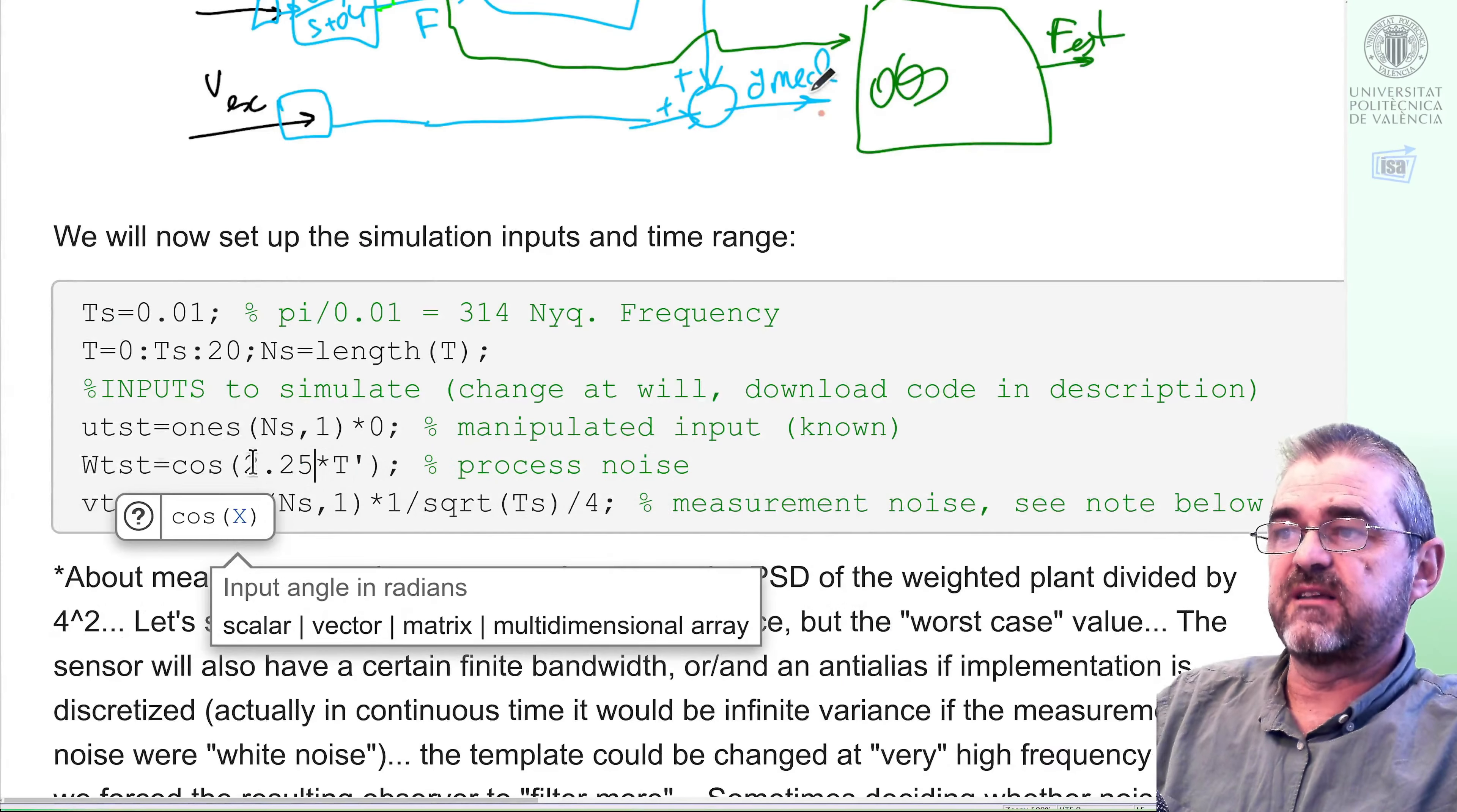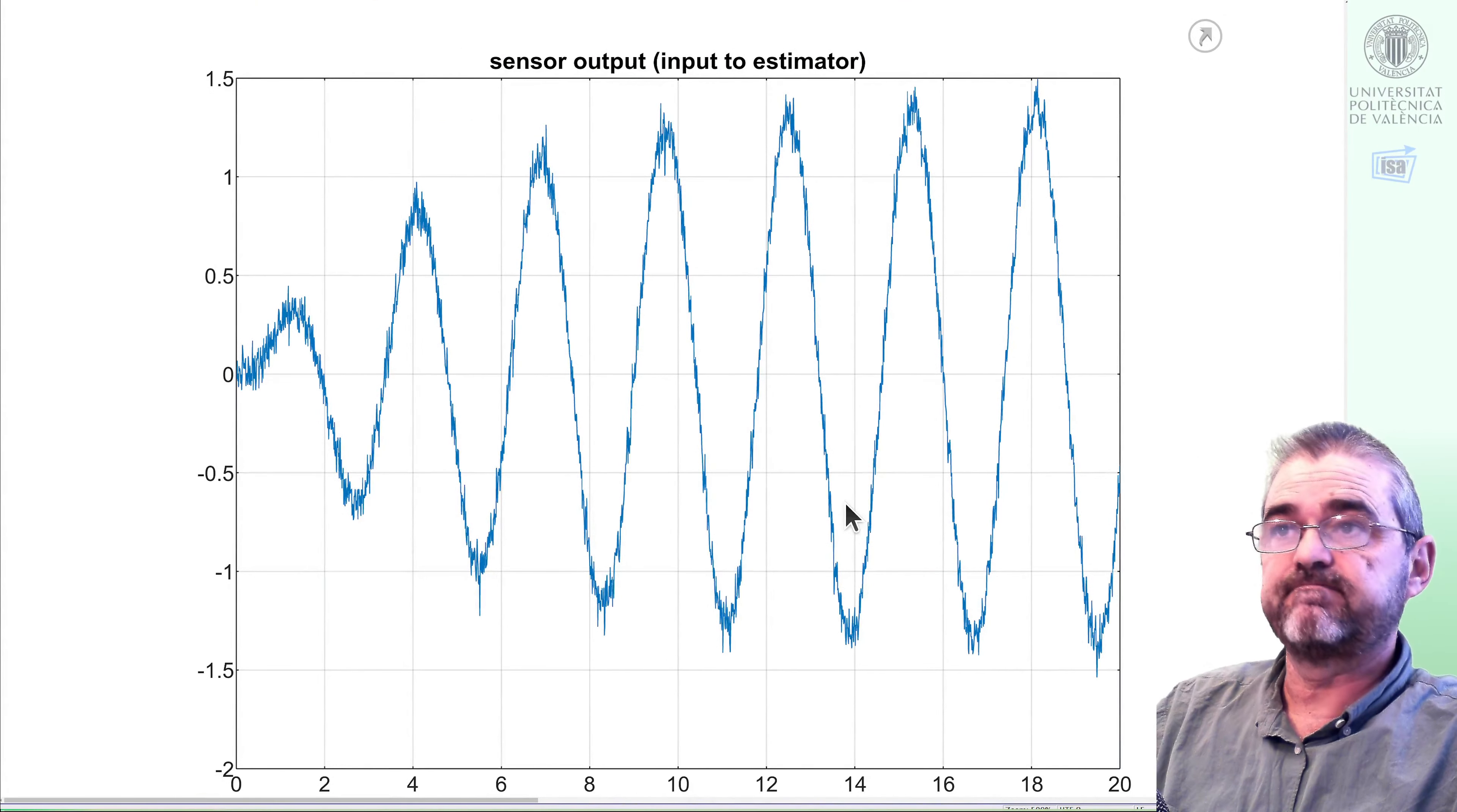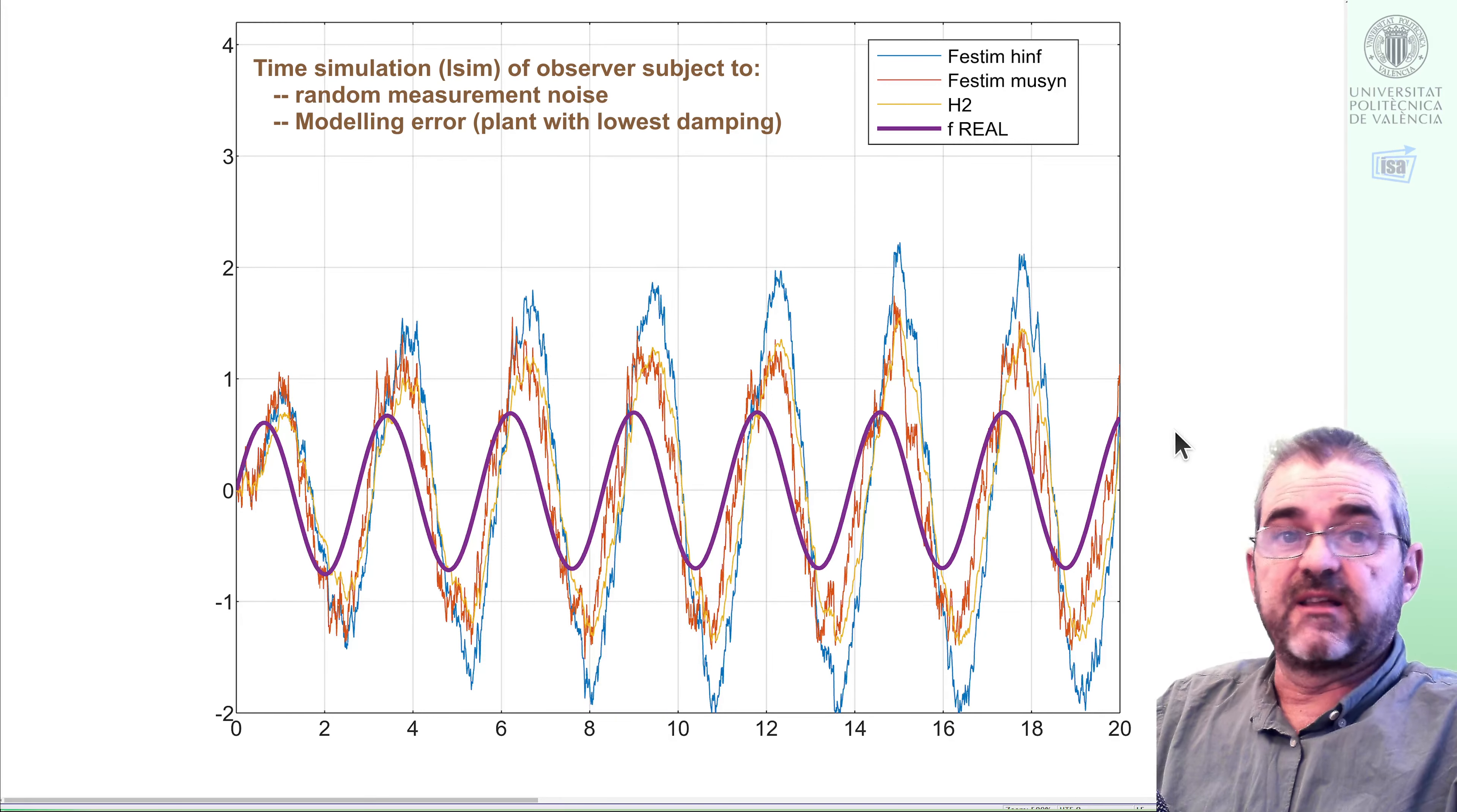If I multiply the frequency by 10, this was the worst case frequency in the H infinity design. This is the sensor input to my estimator, and these are the outputs. The real one is in violet. And we can see that none of the three observers is actually too good. But we see that the H infinity seems to be the worst one. And we are exciting an uncertain resonance peak, and performance is not too good in any of the three cases. But that's what it is.